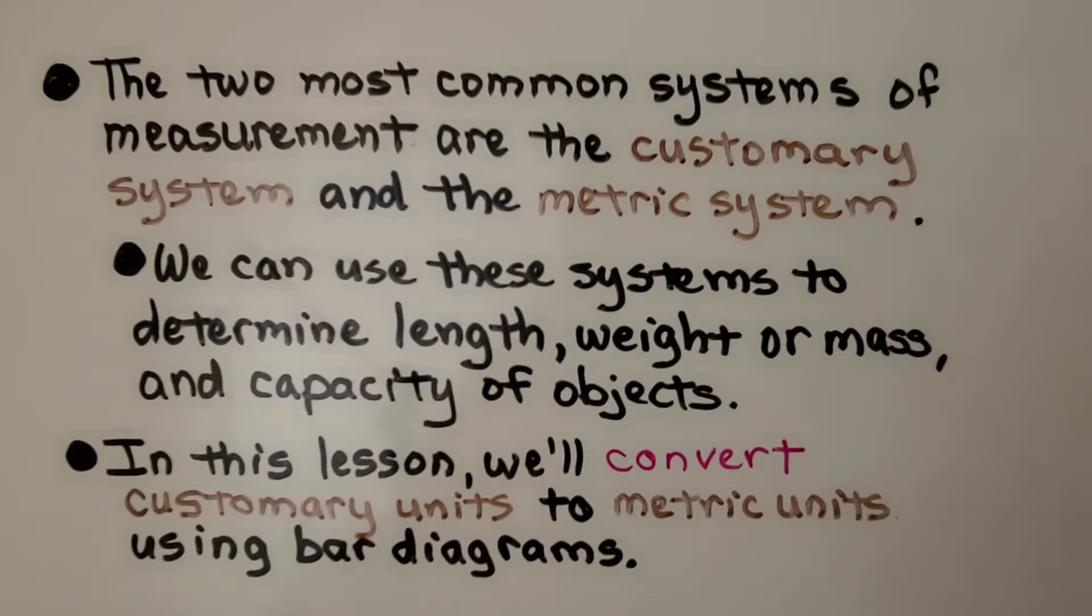The two most common systems of measurement are the customary system and the metric system, and we can use these systems to determine length, weight or mass, and capacity of objects.